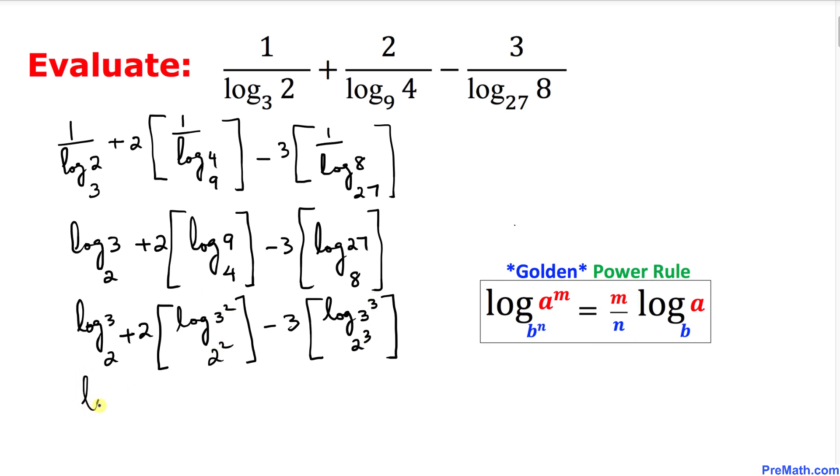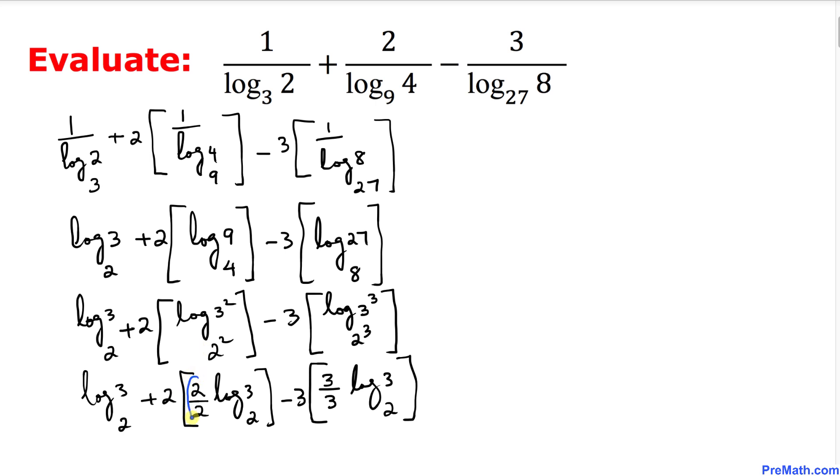So let's go ahead and write down log of 3 with a base 2 for this first term, and plus 2 times I can write these two exponents as a fraction 2 divided by 2 outside log of 3 with a base 2, minus 3 times, once again these two exponents could be written as fractions 3 divided by 3 log of 3 with a base 2. And now we can see that this 2 over 2 is just 1, likewise 3 divided by 3 is 1 as well.